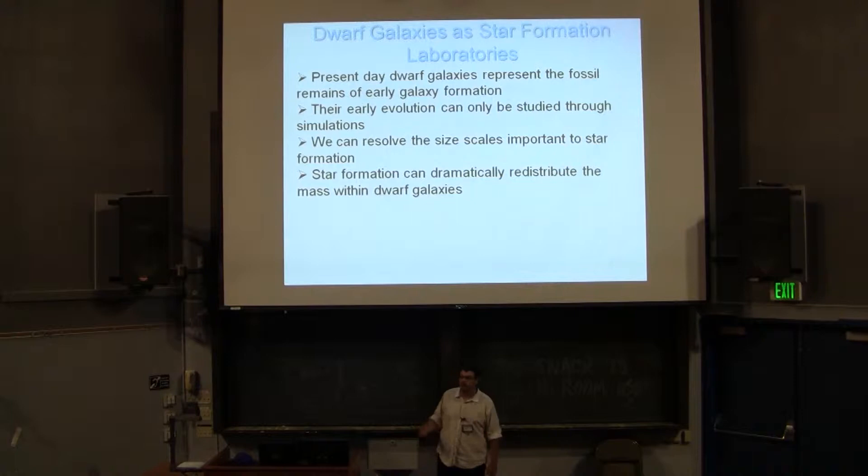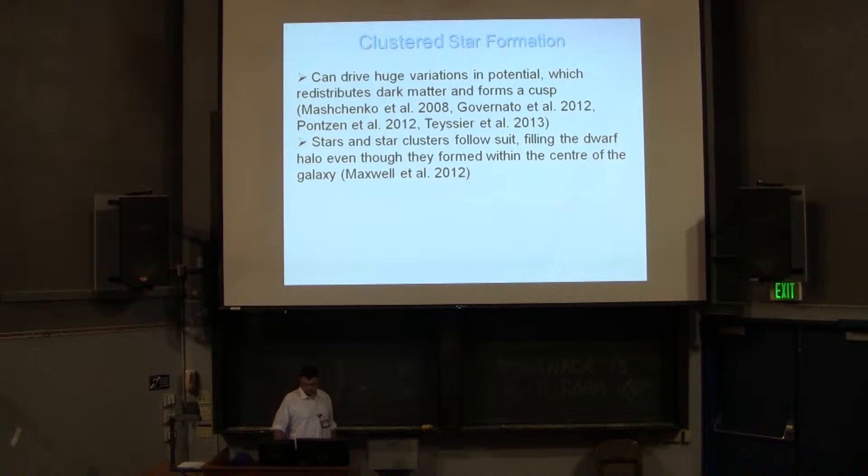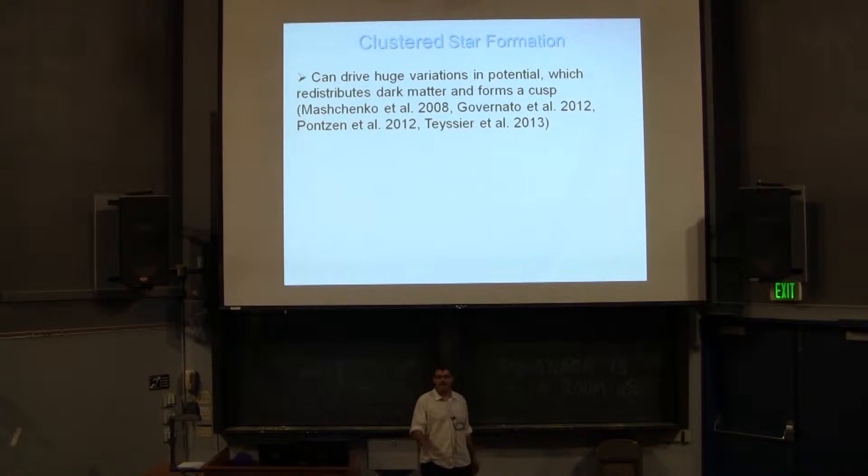A lot of people have been finding over the past few years that feedback in star formation can dramatically redistribute mass within these dwarf galaxies. You can do a lot of fun interesting things — they can drive huge variations in the galactic potential. You can turn a cusp into a core.